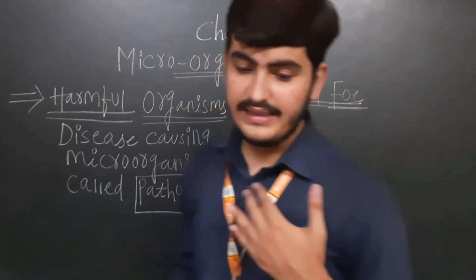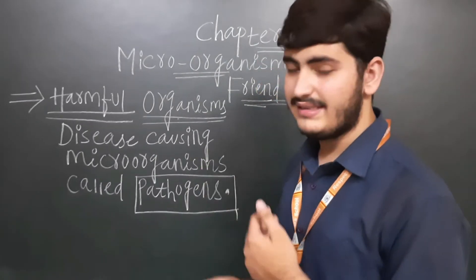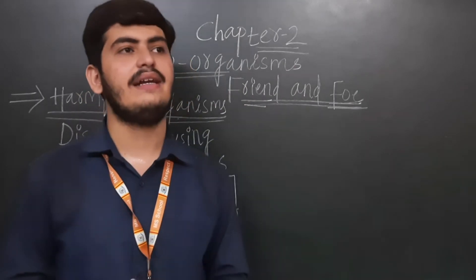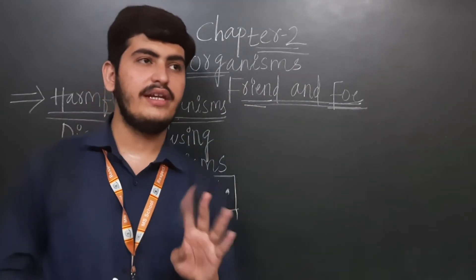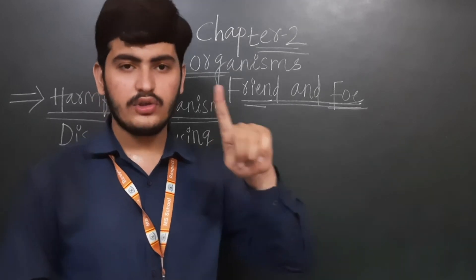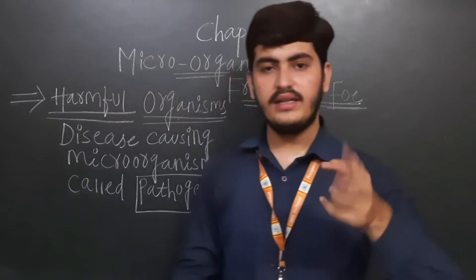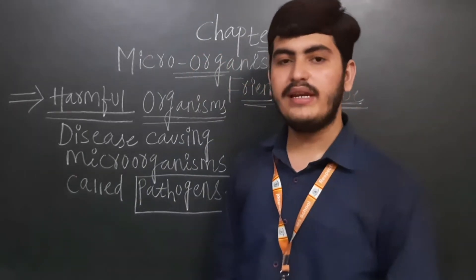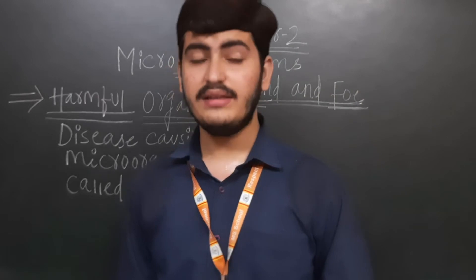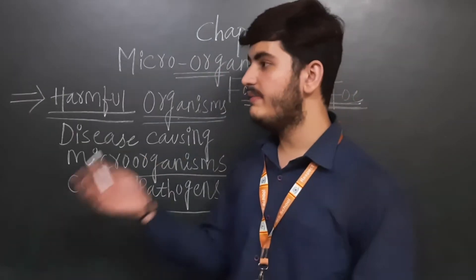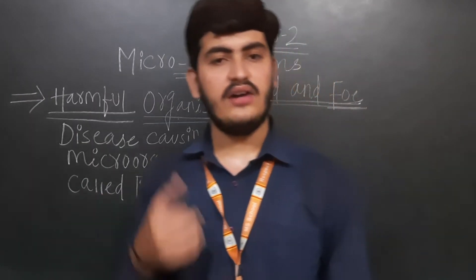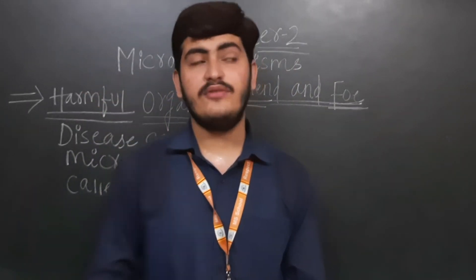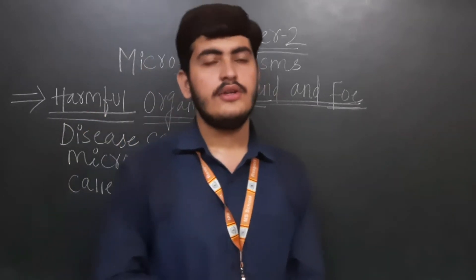Next is disease-causing microorganisms in humans. There are three to four routes by which disease spreads: through the food we eat, through the water we drink, through the air we breathe, and from an infected person. These are the four main routes by which disease spreads.